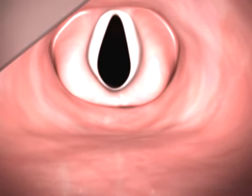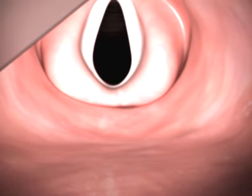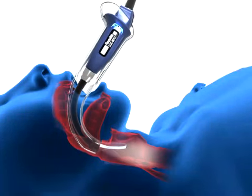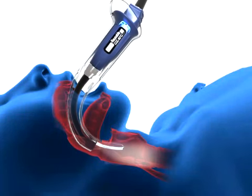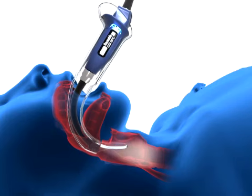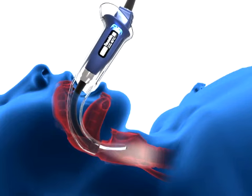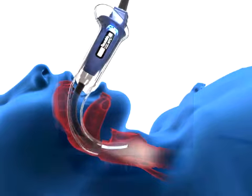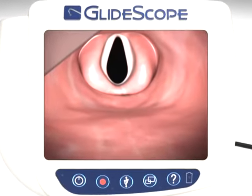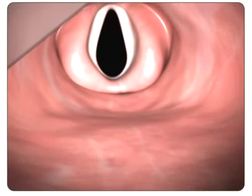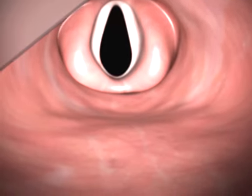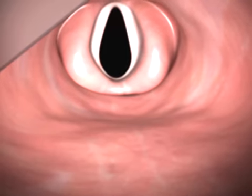The glottic view is optimized by a combination of advancing or withdrawing the laryngoscope slightly, while increasing the tilt to seat the device in the vallecula or on the posterior surface of the epiglottis, to obtain the best glottic view. When the Glidescope Video Laryngoscope is appropriately positioned, the glottic aperture is centered in the upper third of the video display.